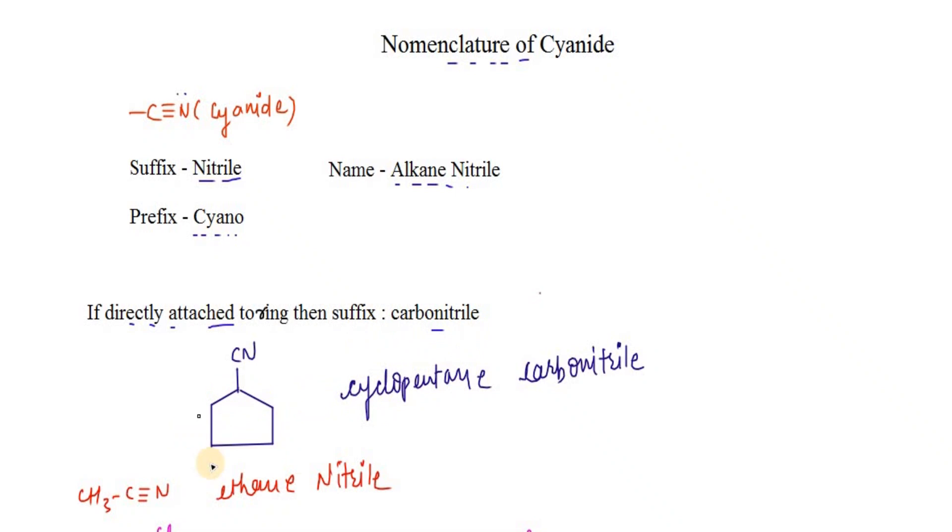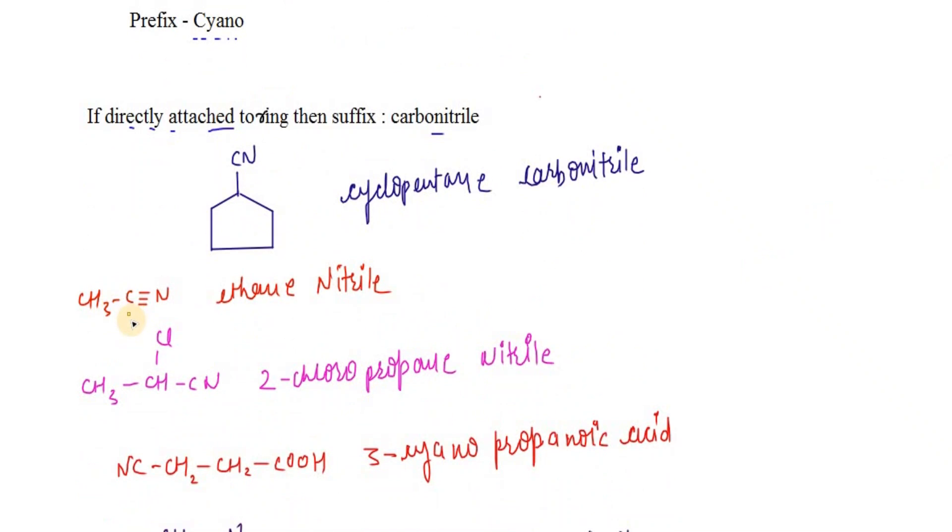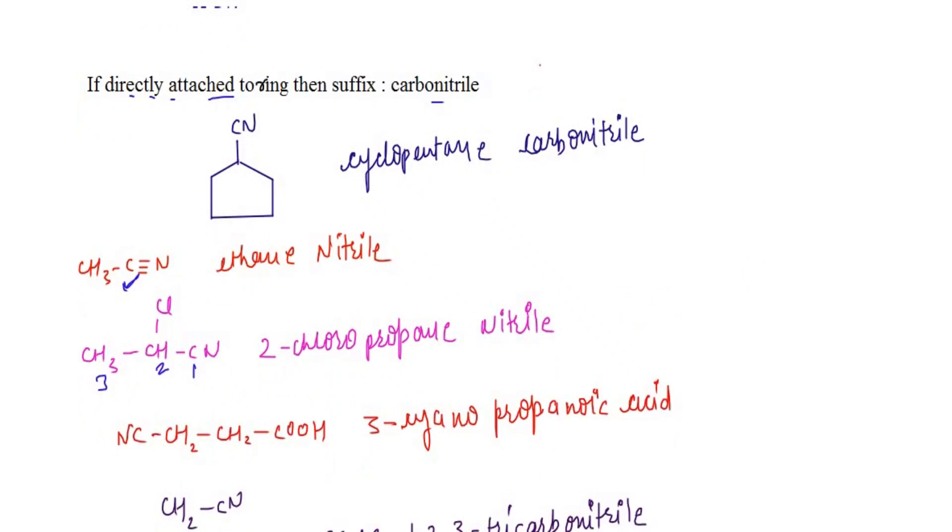Like this example, this is cyclohexane, cyclopentane carbonitrile. Here if you see example CH3CN, ethane nitrile. We are considering this carbon while numbering the principal carbon chain: 1, 2, 3. It is 2-chloropropane nitrile.